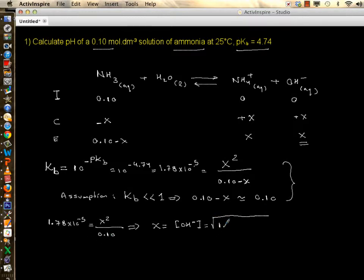It's the square root of denominator times the number, so it's 1.78 times 0.1, which is 10 minus 6. And when you take the square root of this quantity, you will get 0.00133.